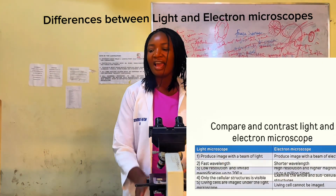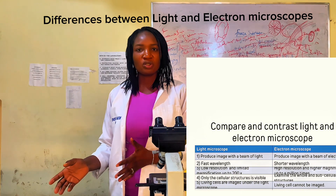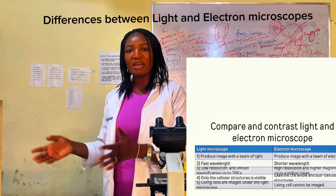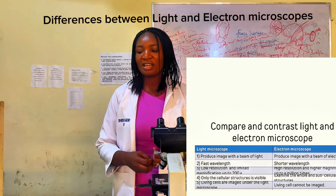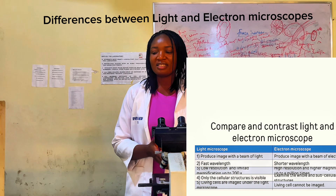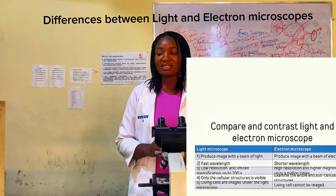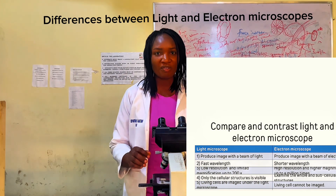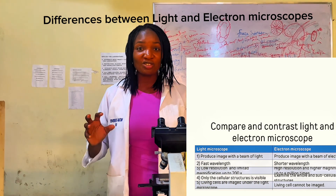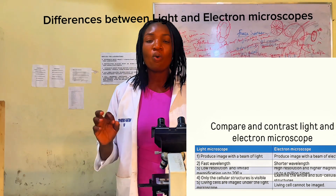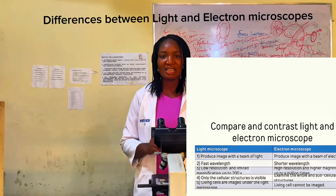The light microscope makes use of a beam of light to produce an image, while the electron microscope makes use of a beam of electrons to produce an image. Another difference is that the light microscope has a longer wavelength, while the electron microscope has a shorter wavelength.